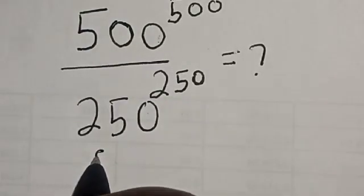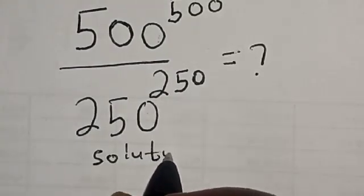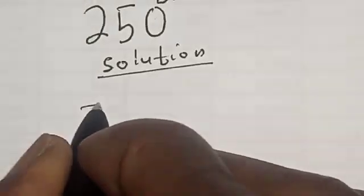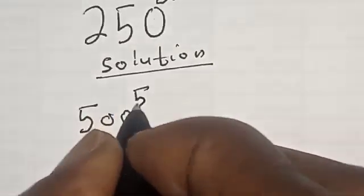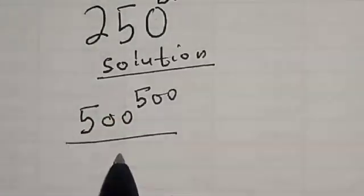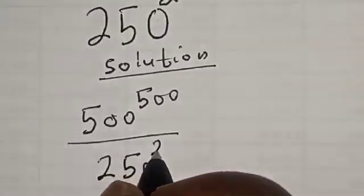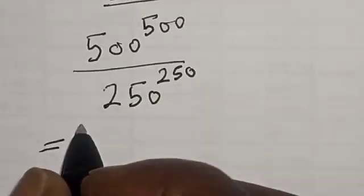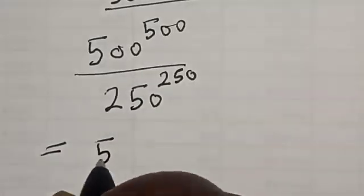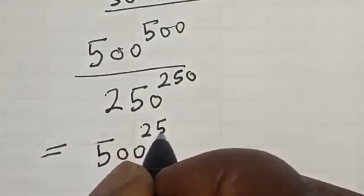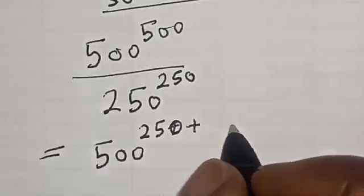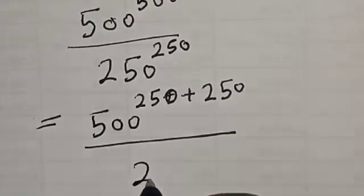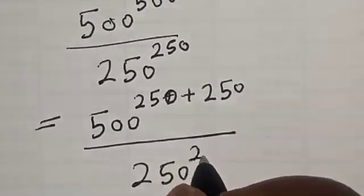Solution. We have the given problem: 500 raised to power 500 divided by 250 raised to power 250. This is equal to 500 raised to power 250 plus 250, divided by 250 raised to power 250.